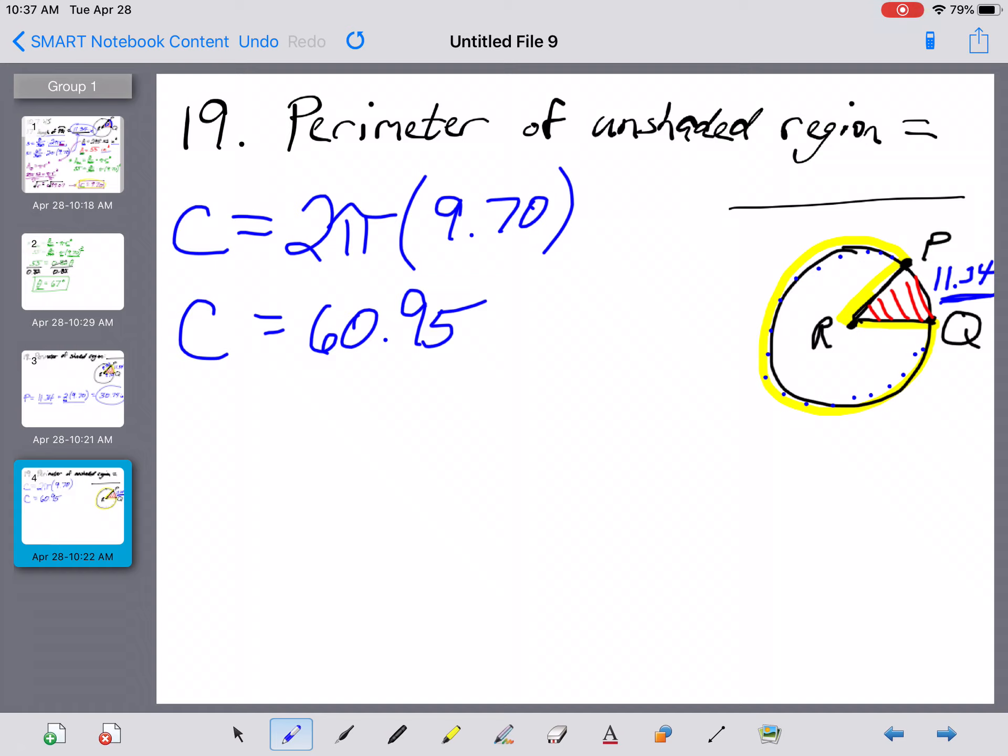If we take the entire circumference, 60.95, and subtract the little arc right here that we don't want, the 11.34, that'll then tell us the measure of this arc out here that we do want.